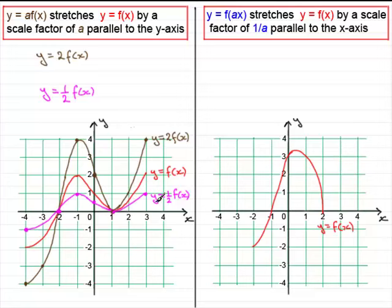When we join these points up, the curve we get is y equals a half f of x. This would apply to any graph — when you multiply by a number in front, it produces a stretch with scale factor exactly equal to that number, parallel to the y-axis.